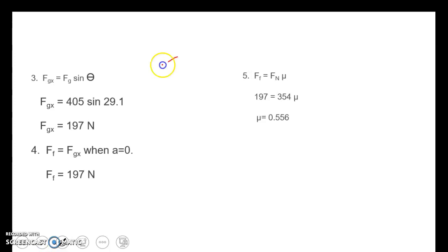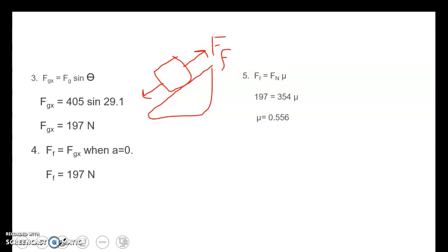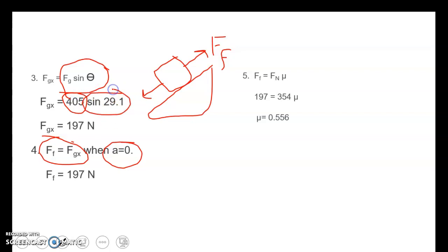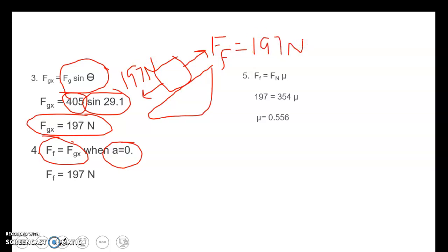We have the parallel component of gravity forcing the block down with friction pushing back. Because acceleration is zero, friction and the parallel force — Fg of x — are equal. So I solve once to get both. Force of g times sine of theta: 405 times sine of 29.1 gives a parallel force of 197 newtons. Since we're not accelerating, friction is also 197 newtons. Putting that into the friction equation: 197 equals 354 times mu. Divide both sides by 354 and we get mu equals 0.556.